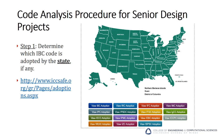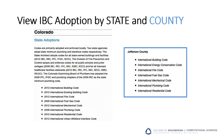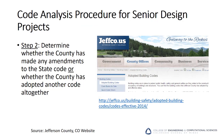Now let's talk about how to approach code analysis for your project. Step one is to determine which IBC code is adopted by the state you're working in. The link shown will take you to an interactive map that allows you to determine this with a few clicks. For Jefferson County in Colorado, at least at the time of the creation of this video, the ICC site shows the following information.